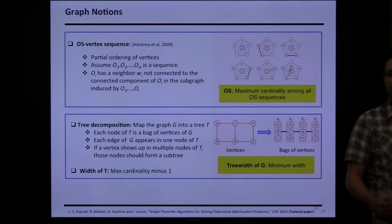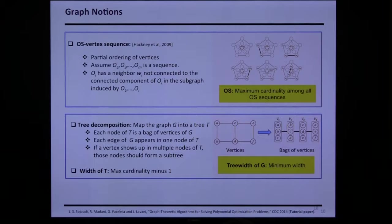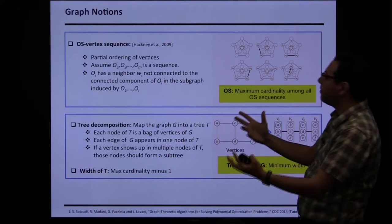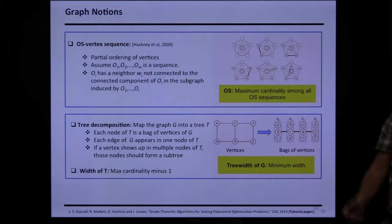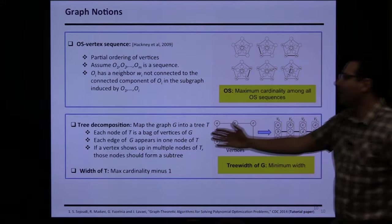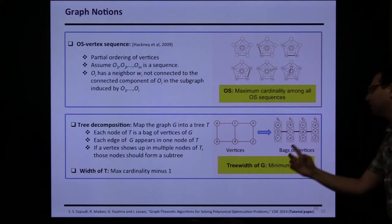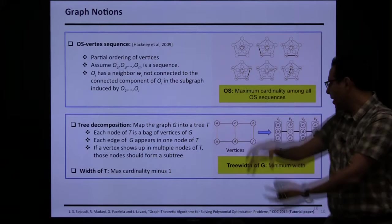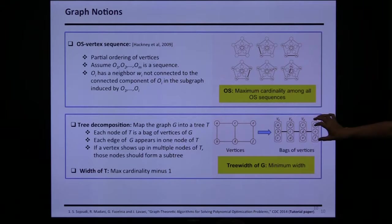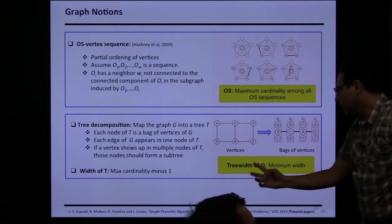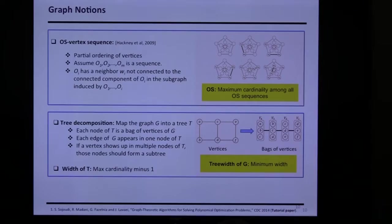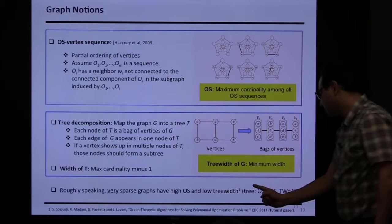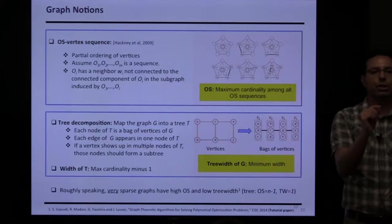The second notion is treewidth (tw), which has been around a long time in discrete optimization. The motivation: many discrete optimization problems are NP-hard — how can we draw the boundary between easy and hard problems? Treewidth tells us when hard problems are not worst-case and get easy. The idea: I have a graph that may not be a tree; how can I make a tree out of it? I go from vertices to super-vertices called bags through clustering, satisfying strange properties — like if a vertex appears multiple times it should form a connected subgraph.